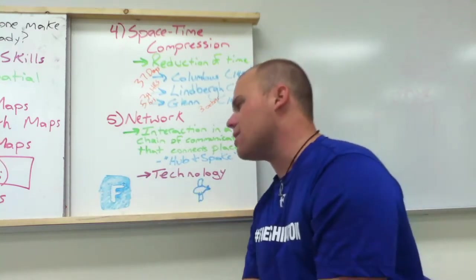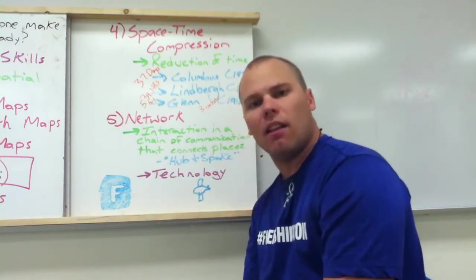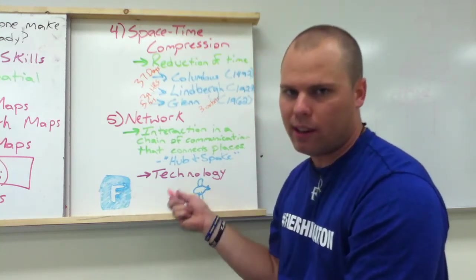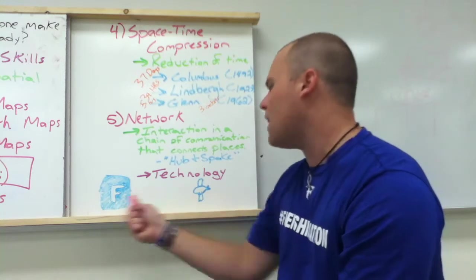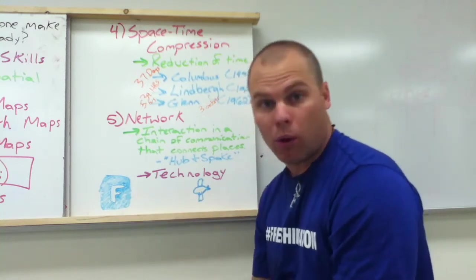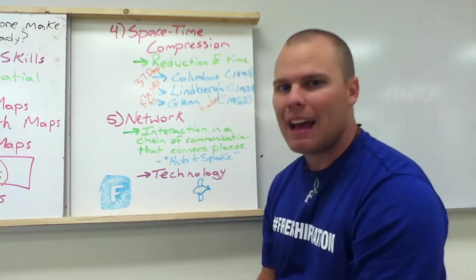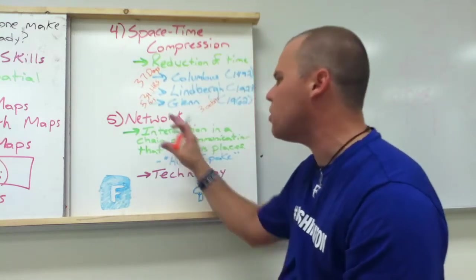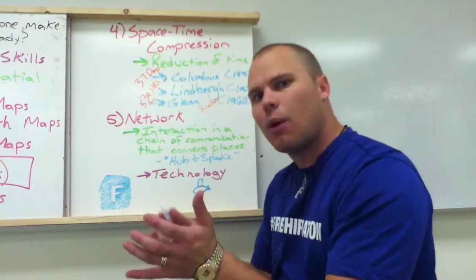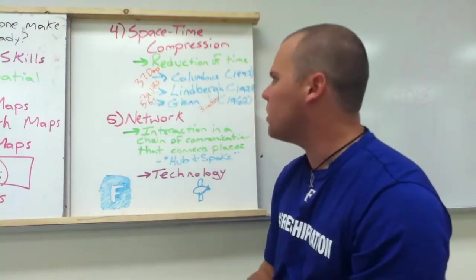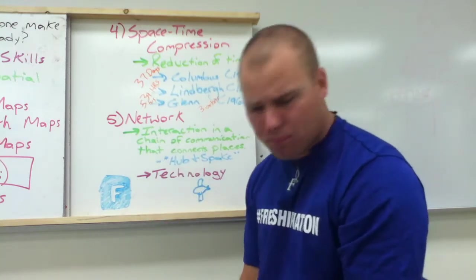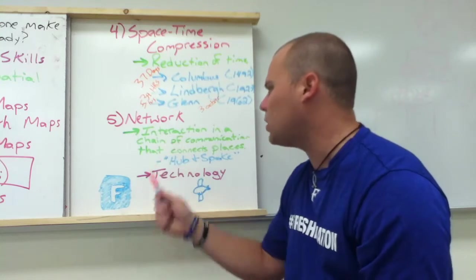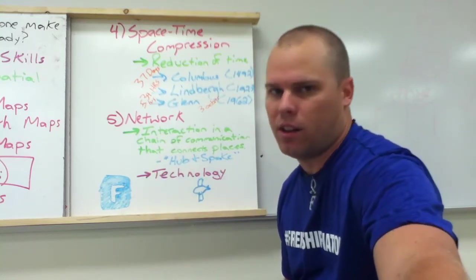Another thing that changes this is technology. Facebook and Twitter are networks as well, and that makes it easier for space-time compression to enable communications within a network — an interaction among places. That's an idea of phenomena of place too, because technology makes interaction easier.